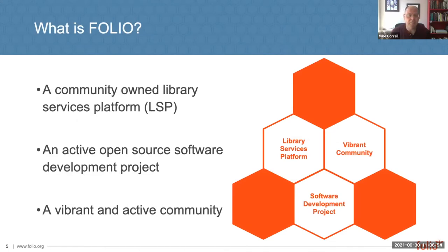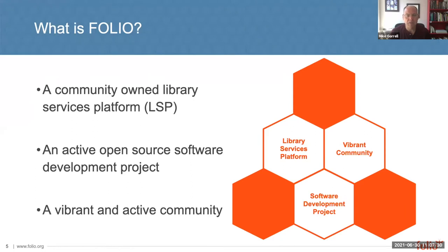Folio is actually many things depending on your perspective. It's a community-owned services platform and LSP — software that you can run your library on. But it's also an active open source development project, meaning there are developers, pull requests, defects, enhancements, and UX design. It's a real software project. And it's also a vibrant and active community — a place where people can meet, collaborate, develop relationships, share ideas, and have a common experience. It's all virtual, and for me, it's been one of the highlights of my career.